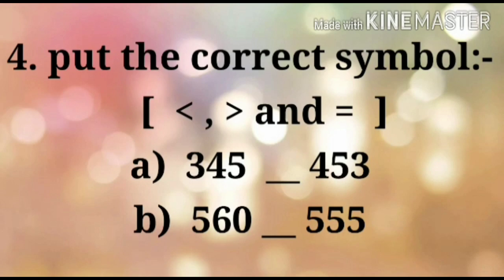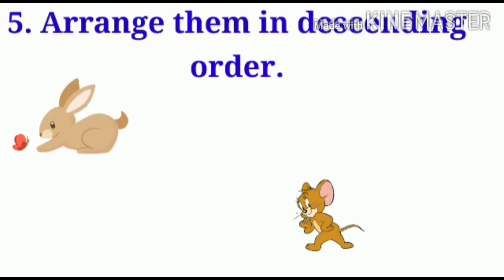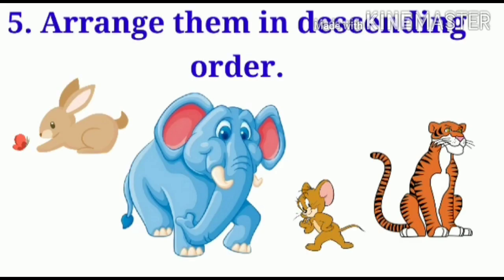Question number 4 is put the correct symbol, that is greater than, less than or equal to. Pick the number and compare properly. Question number 5: Arrange them in descending order. You know all the animals very properly. So, arrange in descending order.